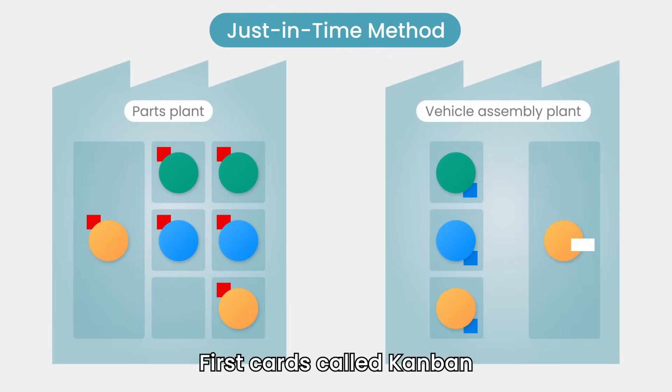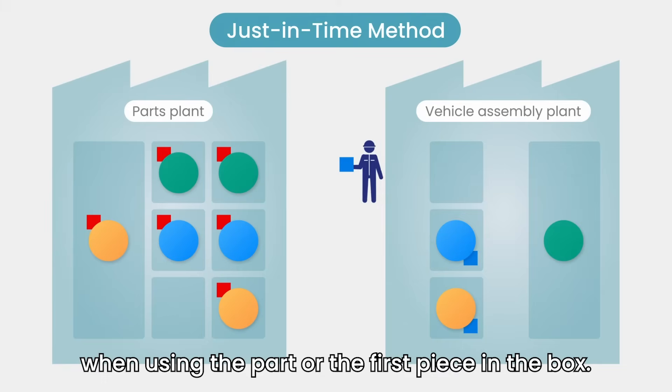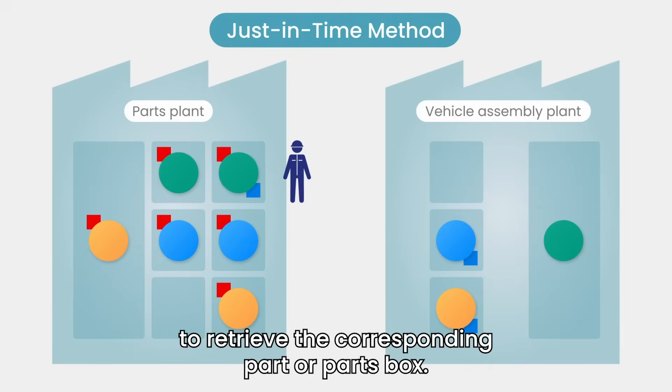First, cards called Kanban are attached to the part or parts box. Workers remove the Kanban cards when using the part or the first piece in the box. They then go to the preceding process with the Kanban to retrieve the corresponding part or parts box.